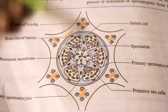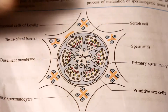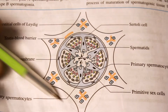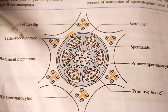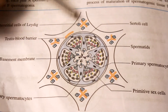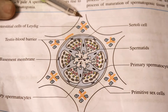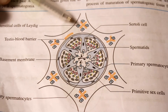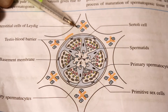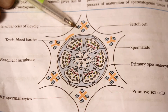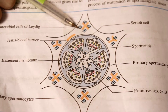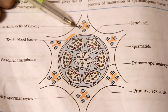In the cross section of the seminiferous tubule, it is surrounded by a cluster of interstitial cells of Leydig. The interstitial cells of Leydig secrete testosterone in response to luteinizing hormone. Luteinizing hormone comes from the pituitary gland.